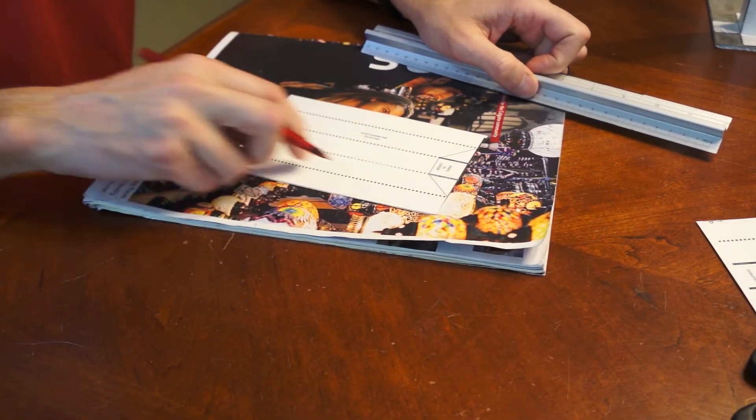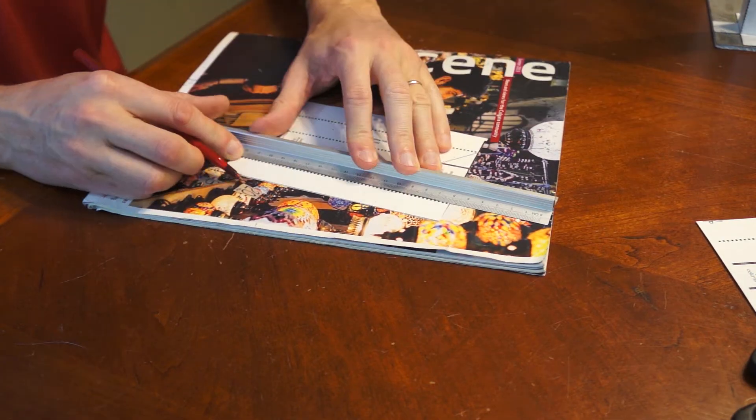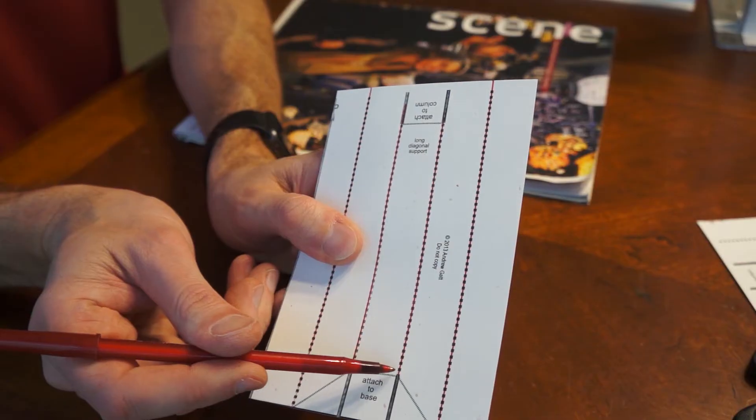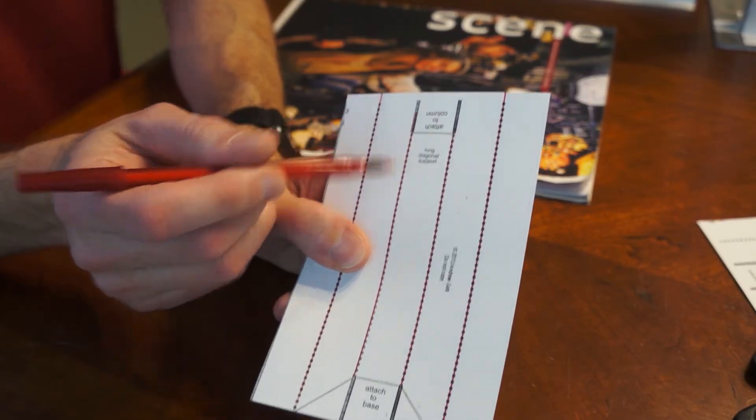First step is to trace along these long dotted lines. Next, you're going to trace along these two short dotted lines.